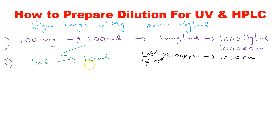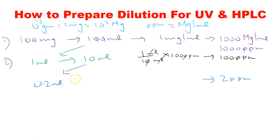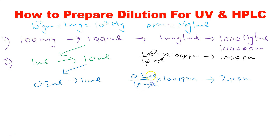From Stock 2 we prepare working dilutions for absorbance reading or HPLC run. For a 2 ppm solution: take 0.2 mL from the 10 mL Stock 2 and dissolve in 10 mL in a volumetric flask. The calculation: 0.2 divided by 10, multiplied by 100 ppm — mL cancels — gives 2 ppm solution.